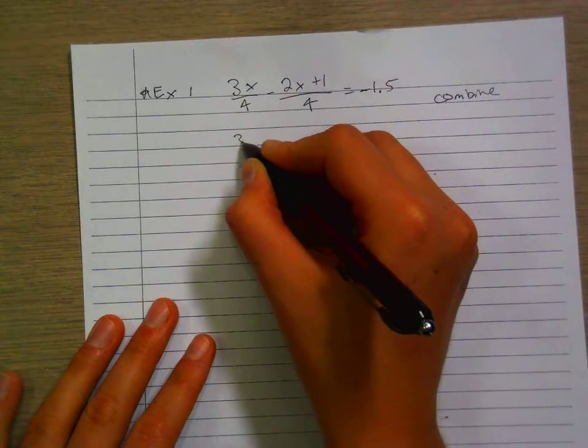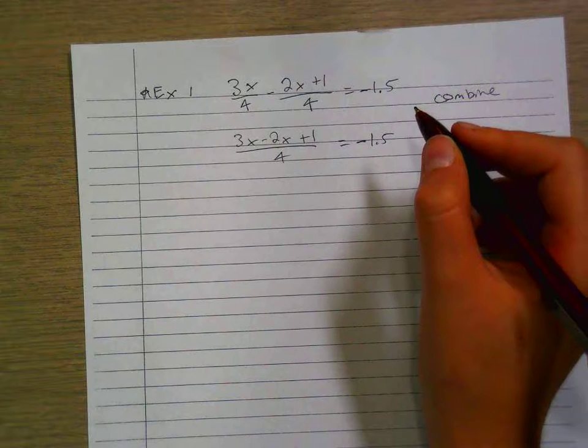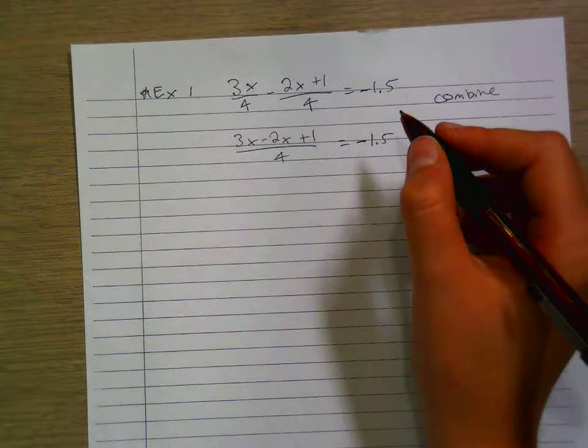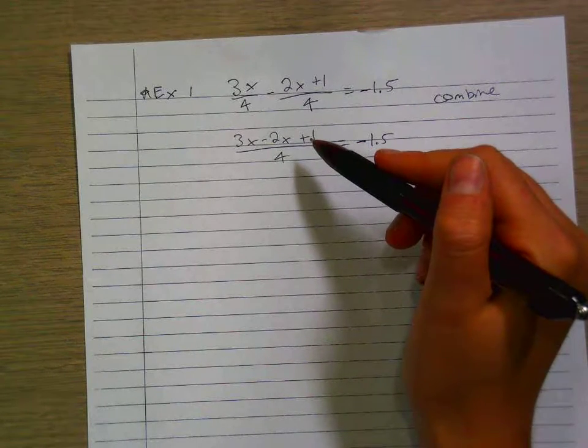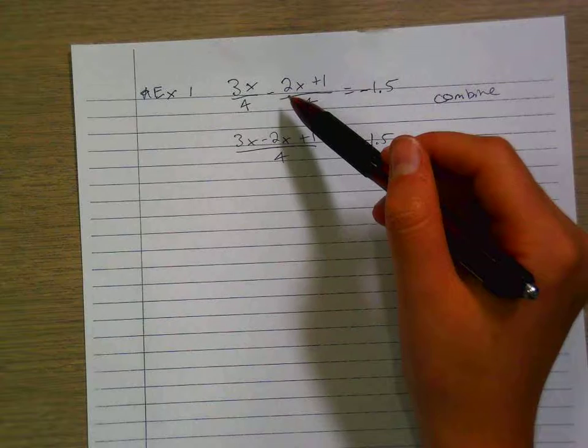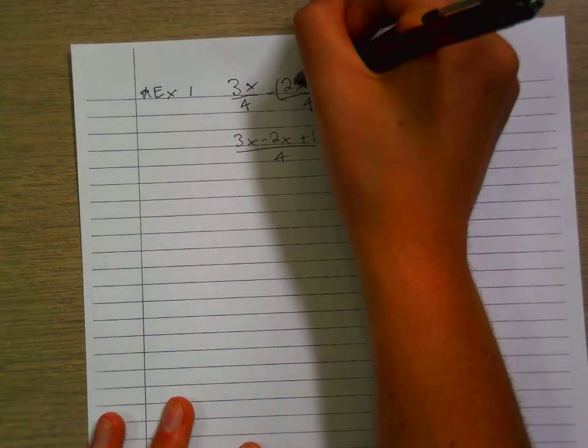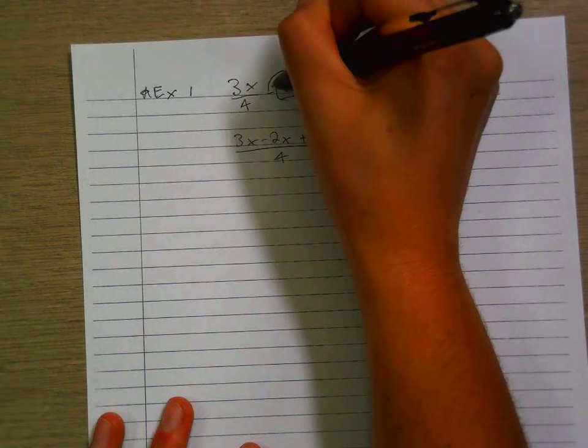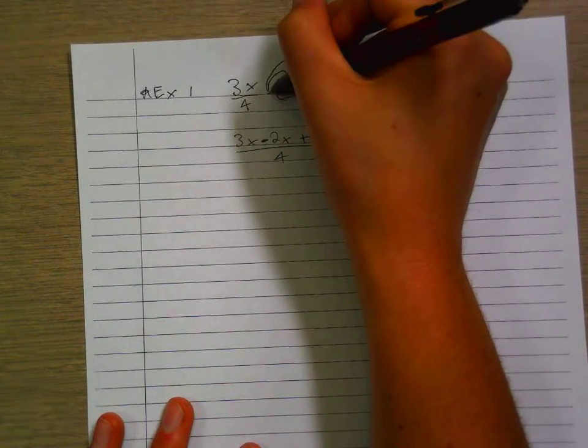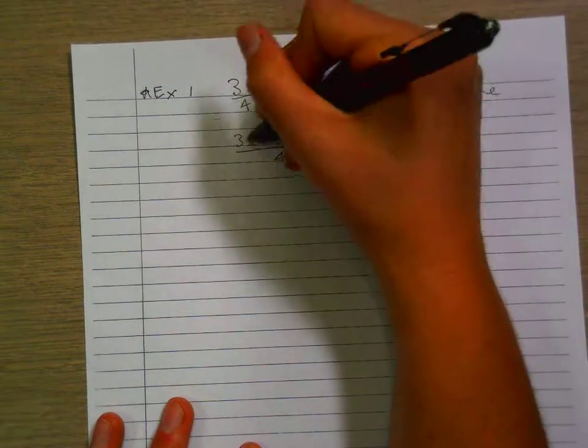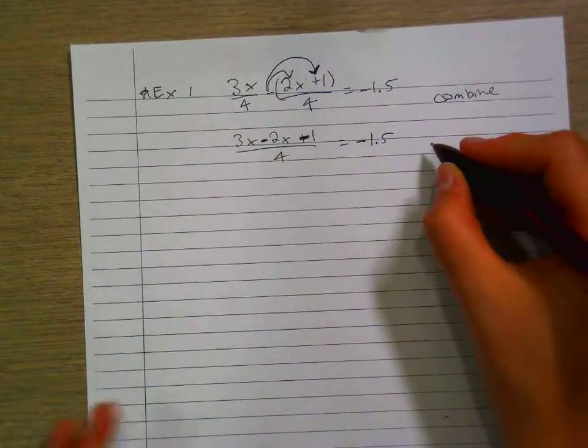Let's rewrite this as one fraction. Combine: 3x minus 2x plus 1 over 4 equals negative 1.5. Now that we've combined, let's use the distributive property. We're subtracting this whole thing. Therefore, this is going to be negative. This will also transfer to this sign. Because this sign is positive, that becomes negative. They're both negative. Use that minus to go to both.